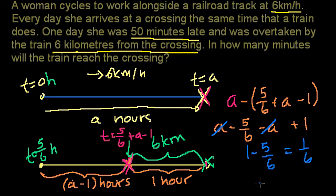There are 60 minutes in an hour, so 1/6 of that is 10 minutes. So it takes the train 10 minutes to get to the crossing from the point that it passed her.